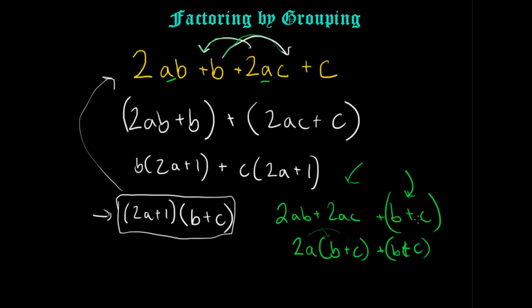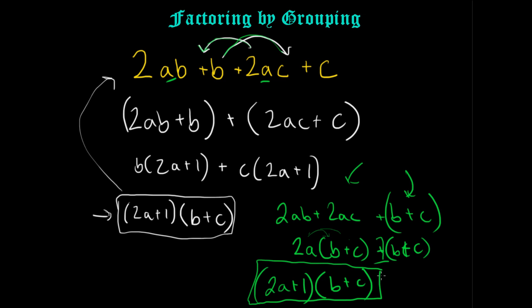So I'll factor out (B plus C), and what I get is (B plus C) times (2A plus 1) — because it's 2A times (B plus C) plus 1 times (B plus C). If you look at these two expressions from both approaches, they are 100% equivalent. That's factoring by grouping, and it's just an example of how choosing different items to group can change the process you go through, but yields the same result.